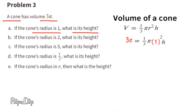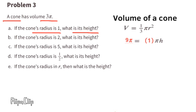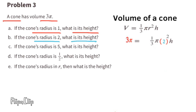Since we're solving for height, we multiply both sides by the reciprocal of 1/3, which is 3. That gives us 9 pi equals 1 times pi times h. Now divide both sides by pi: 9 pi divided by pi equals 9, and pi times h divided by pi equals h. The height of this cone is 9 units.